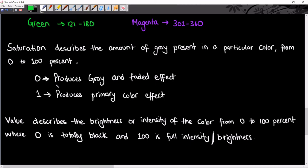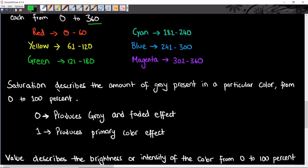Value describes the brightness or intensity of color from 0 to 100 percent, where 0 is totally black and 100 is full intensity or full brightness.